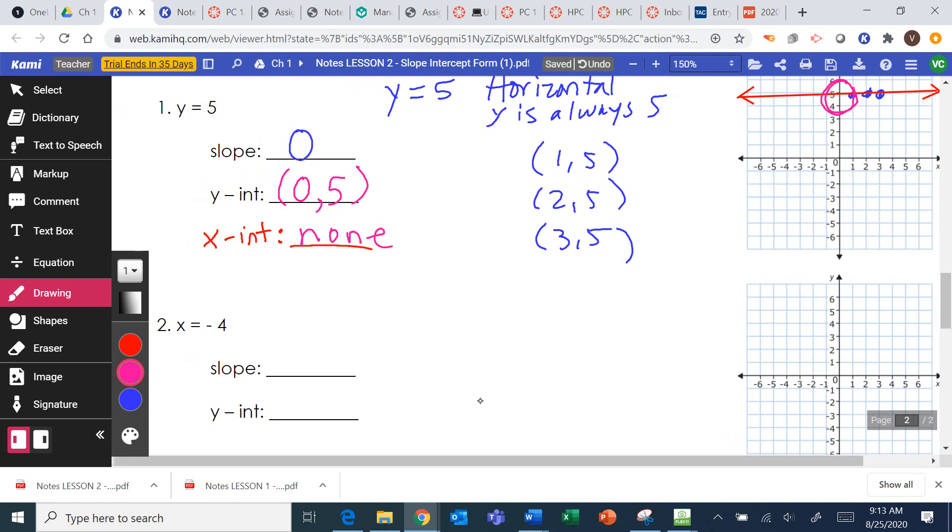So this is an equation where x is always negative 4. So negative 4, 1, negative 4, 2, negative 4, 3 could be some examples. x is always negative 4. What kind of line am I making? What kind of line is this? Vertical. Perfect. Vertical line.